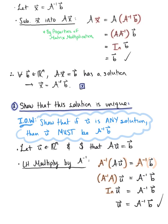We can conclude that the solution is unique — no matter what the vector is, if it is any solution, it must still be defined by the inverse of matrix A multiplied by vector b. This completes the second part of our proof and completes the proof of the whole theorem. Let's now explore this theorem with some examples.